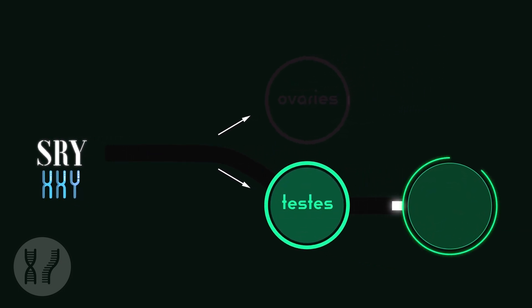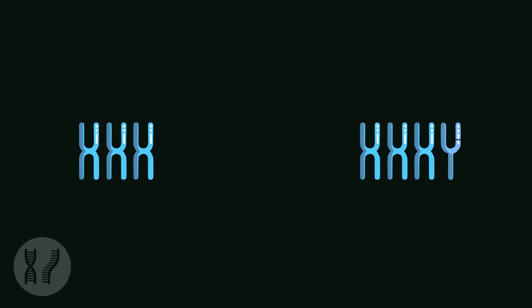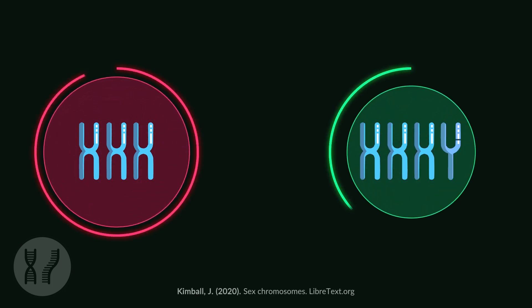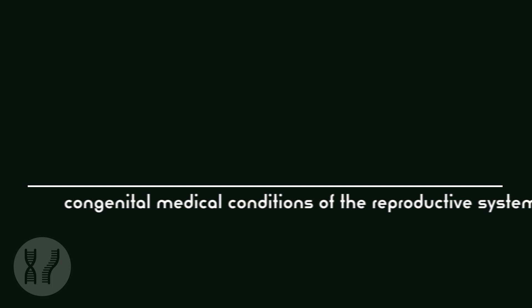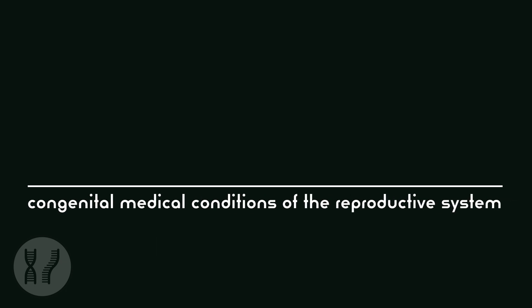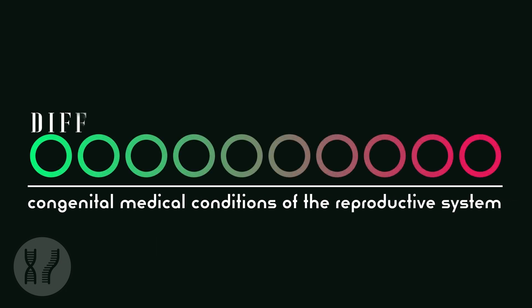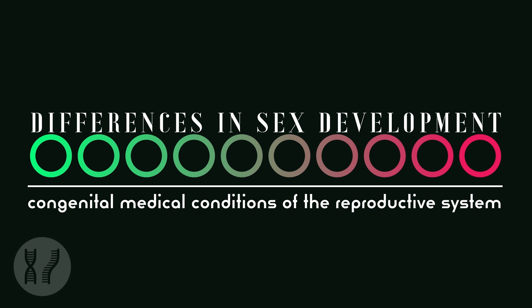This genetic system is so consistent that, even in cases of XXX or XXXY, the fetus still develops as a female or male, respectively. The author then discusses rare congenital medical conditions of the reproductive tract, known as differences in sex development, or DSDs, to argue against the sex binary.